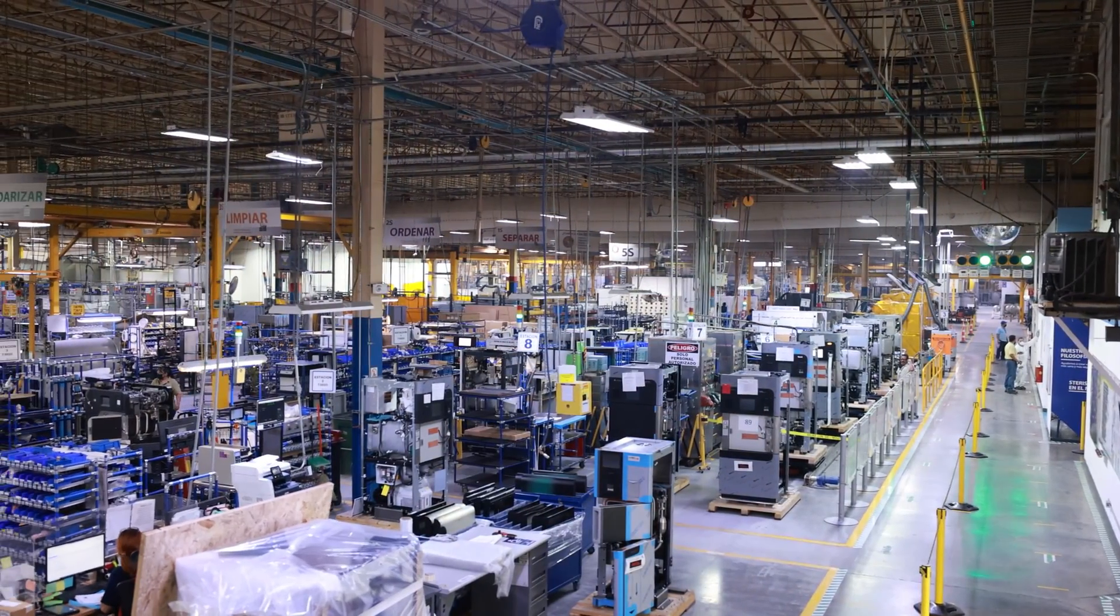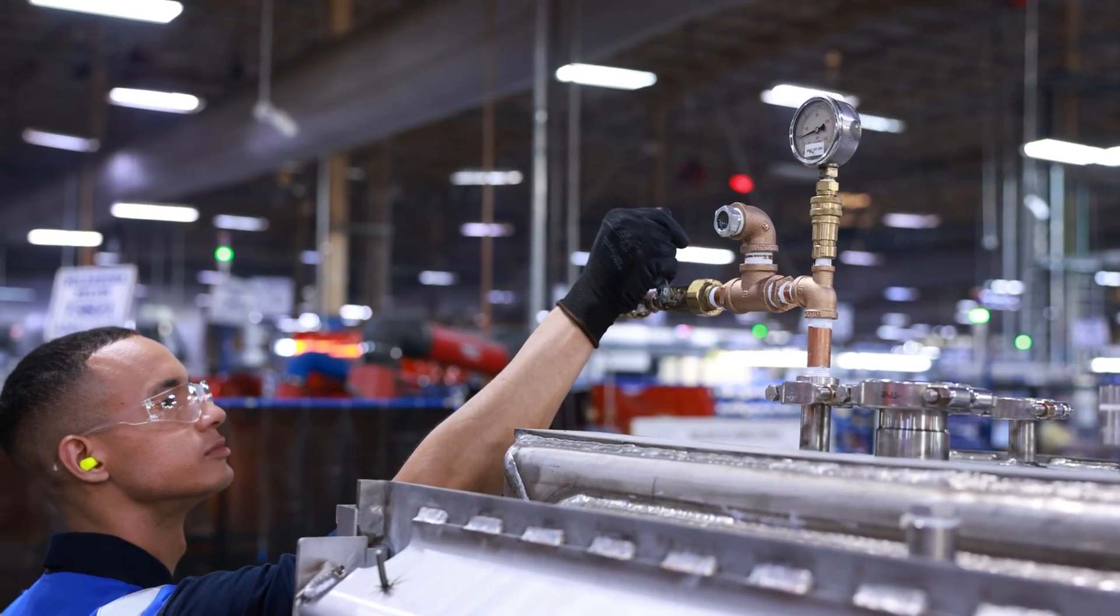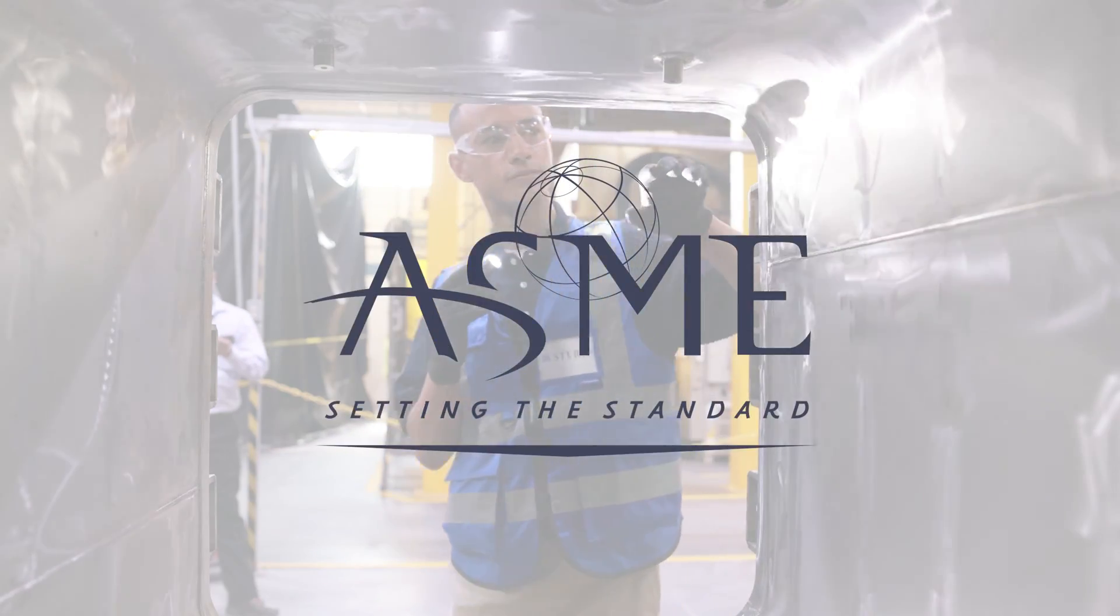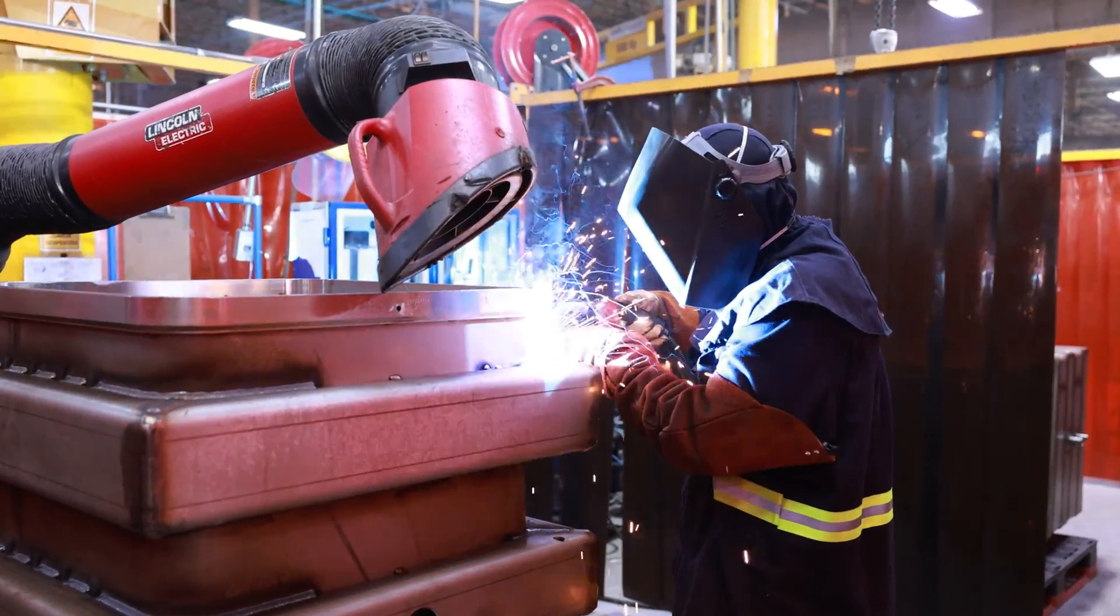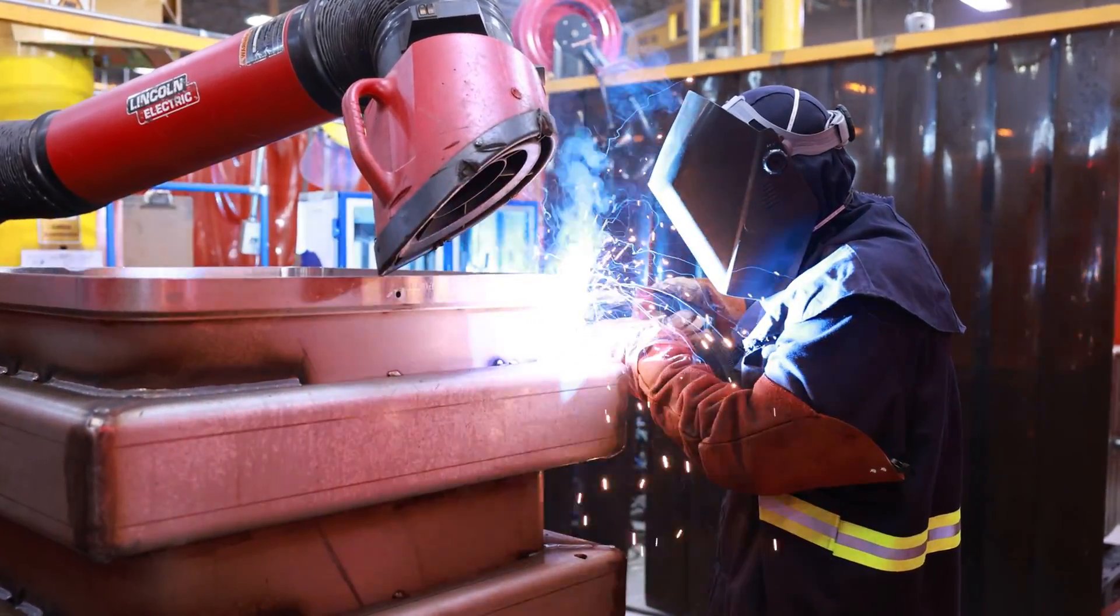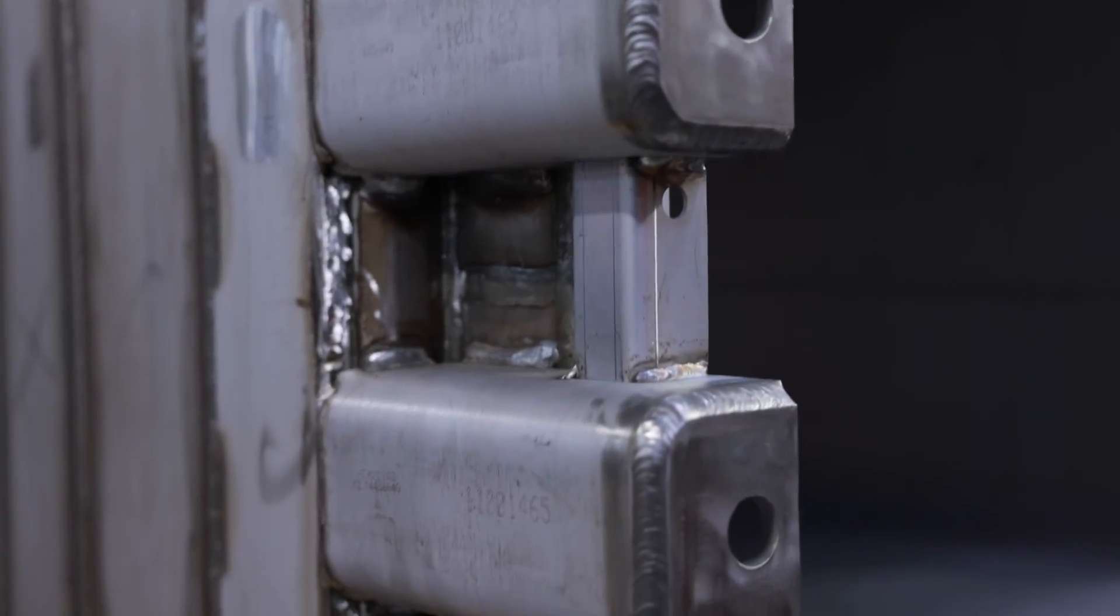The AMSCO 600LS is manufactured in an ISO 13485 certified facility and is tested for conformity to applicable standards such as ASME. The chamber and jacket are manufactured from 316L stainless steel with a full 304 stainless steel jacket for maximum corrosion resistance and durability.